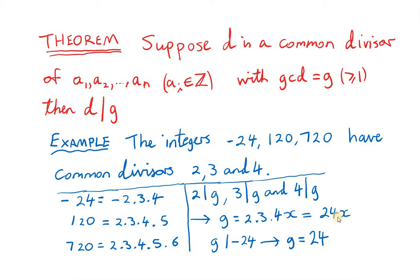g cannot be 0, and x is a positive integer, so x can only have values 1, or 2, or 3, etc. So x must equal 1 in this case, if we want g to divide minus 24.